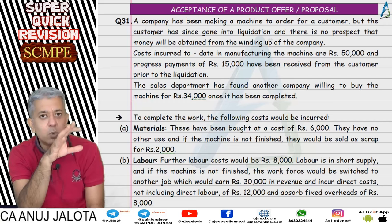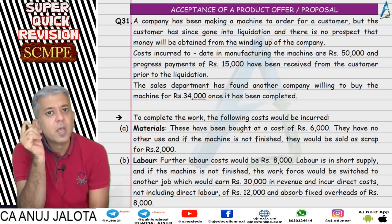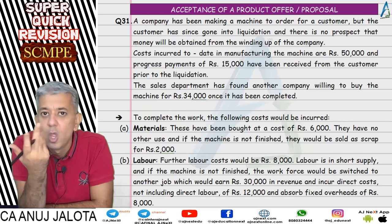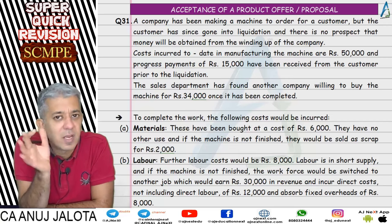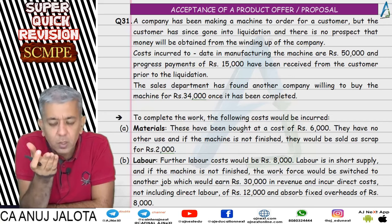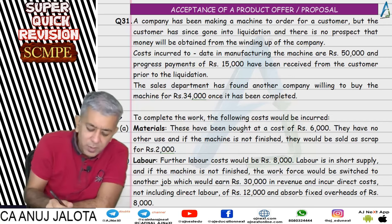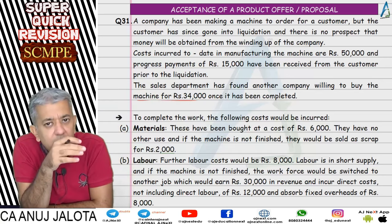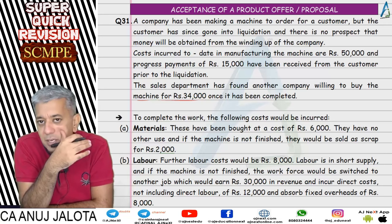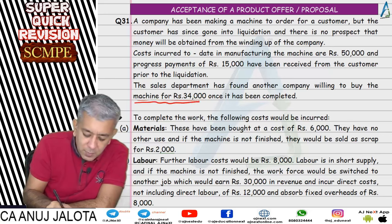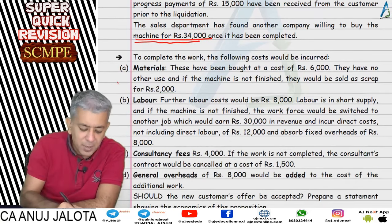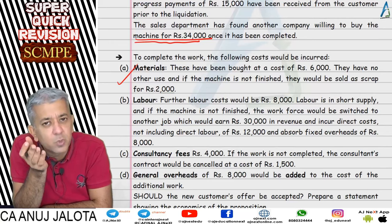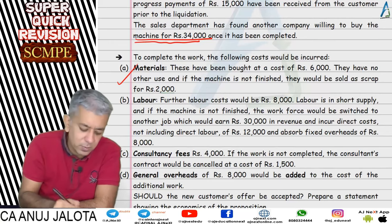In Question 31, we were building a machine for a customer. We had already spent 50,000 rupees and received 15,000 rupees from the customer — but both are past figures, ignored. The customer went into liquidation and no more money is recoverable from them. A new customer arrived and offered a new deal. The material adjustment was simple: we were about to sell the existing material for 2,000 rupees, but now we'll use it instead, so those 2,000 rupees will be lost — that's the relevant cost.